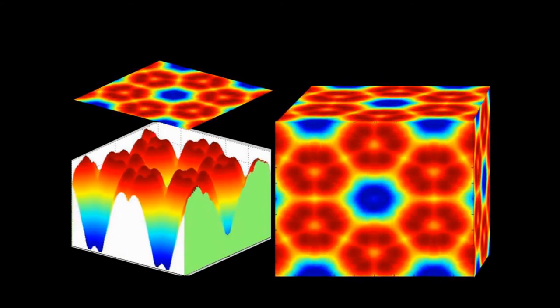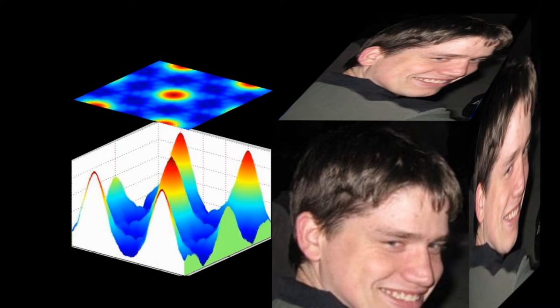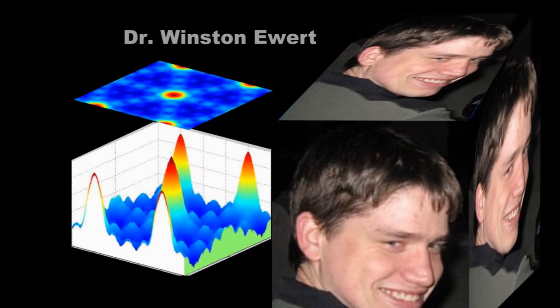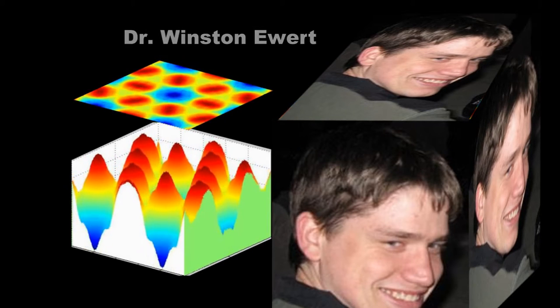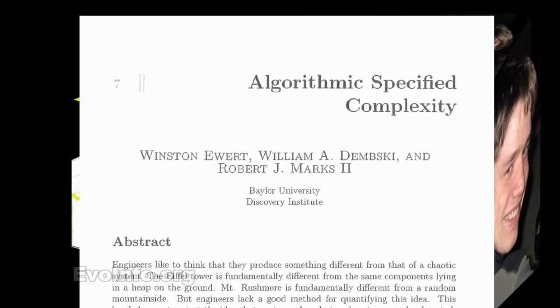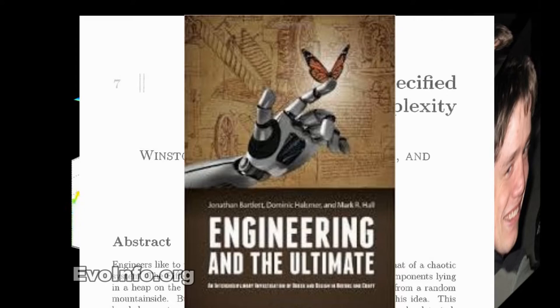The first podcast dealt with the genesis of algorithmic specified complexity. Application of algorithmic specified complexity to Conway's Game of Life was the topic of the second podcast. This podcast with Dr. Ewart deals with the topic of using algorithmic specified complexity in assessing meaning in images.